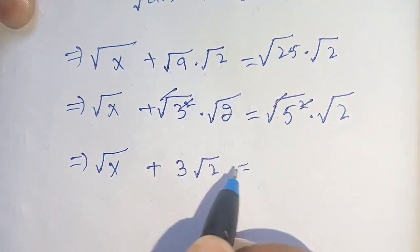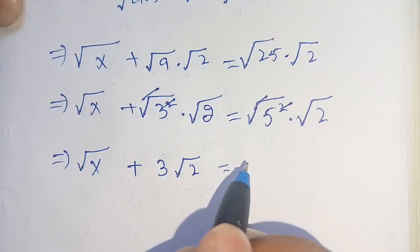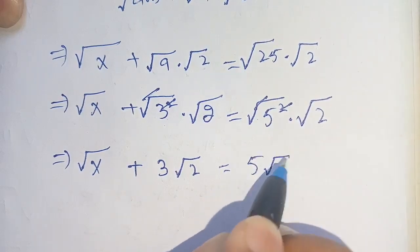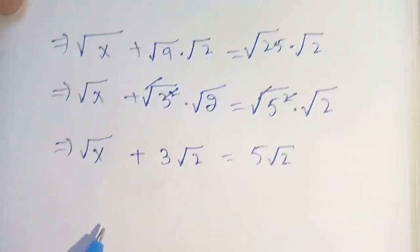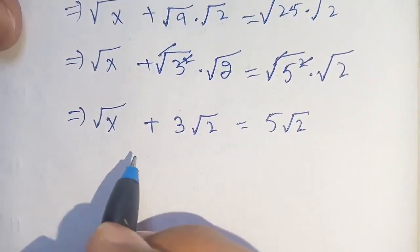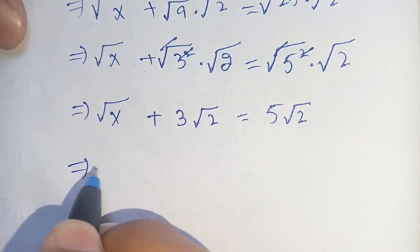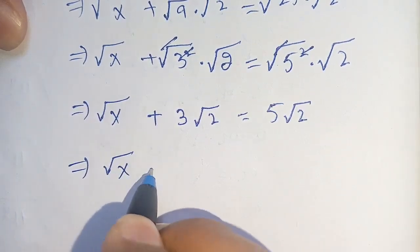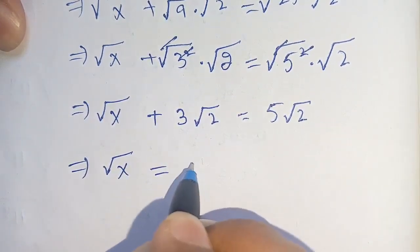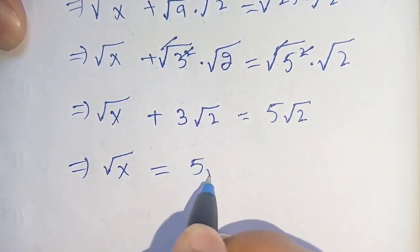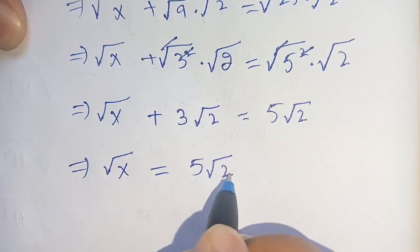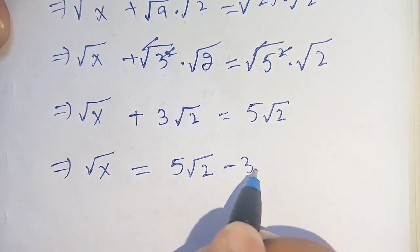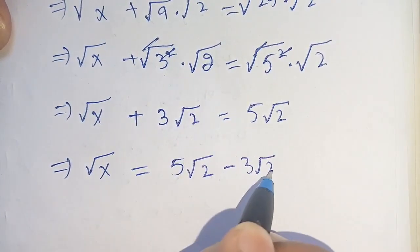In the next step, we isolate the square root of x: square root of x is equal to 5 square root of 2 minus 3 square root of 2.